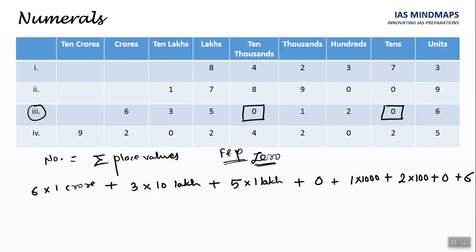Therefore, 6 crore, plus 30 lakh, plus 5 lakh, plus 1000, plus 200, plus 6. So it is 6 crore, 35 lakh, 1206. And please pause the video and solve these remaining 3 examples.